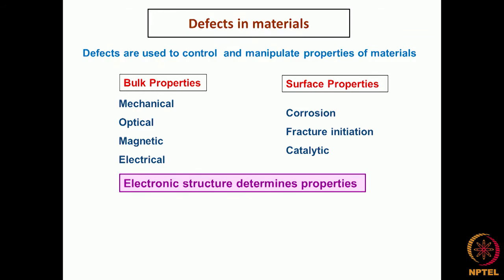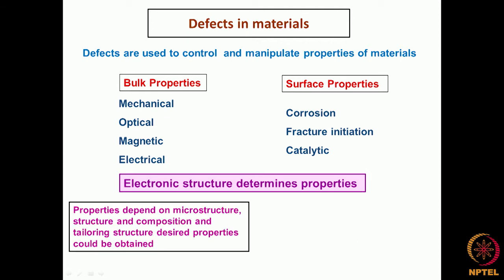All these property changes are basically controlled by the electronic structure of the material. That is, essentially the electronic structure is the one which determines the properties of the material. This aspect we will not be going into in any detail — we will exclude this in the present set of lectures, as this forms part of a physics course. The properties depend upon microstructure, crystal structure, and composition, and by tailoring the structure, desired properties could be obtained in the material.